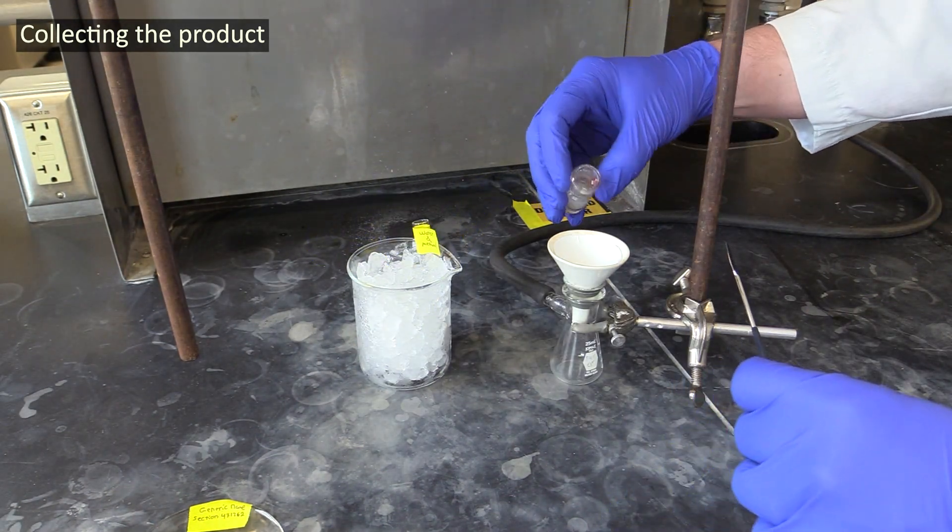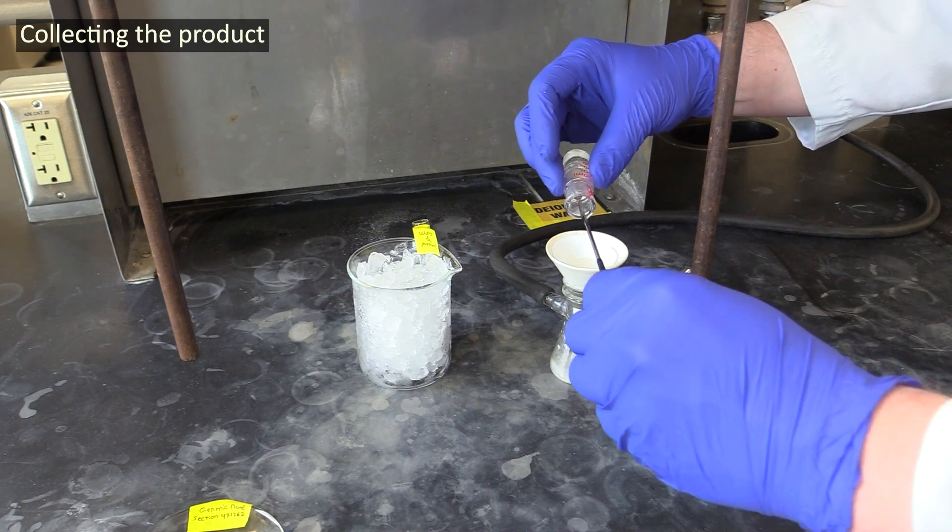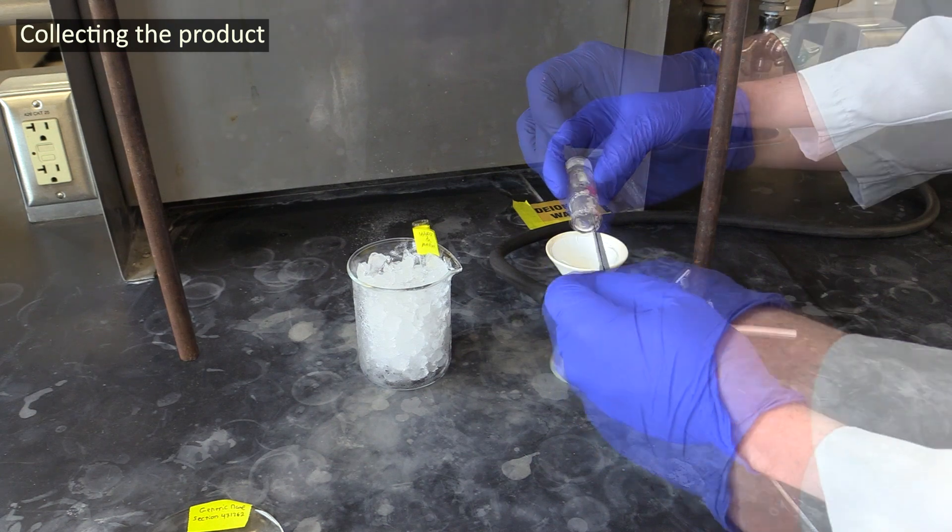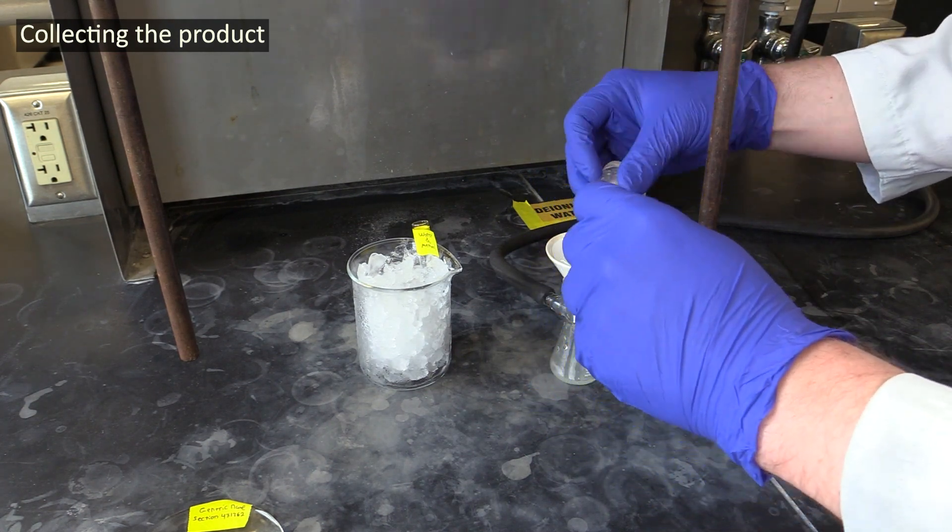You'll collect your precipitate by vacuum filtration. Try to get the bulk of it out of the vial, but leave a little behind. Later on, you'll use the leftover product in the vial for TLC analysis.